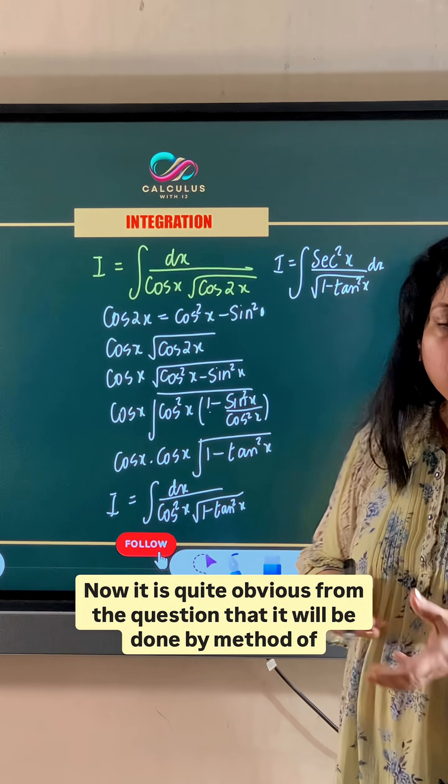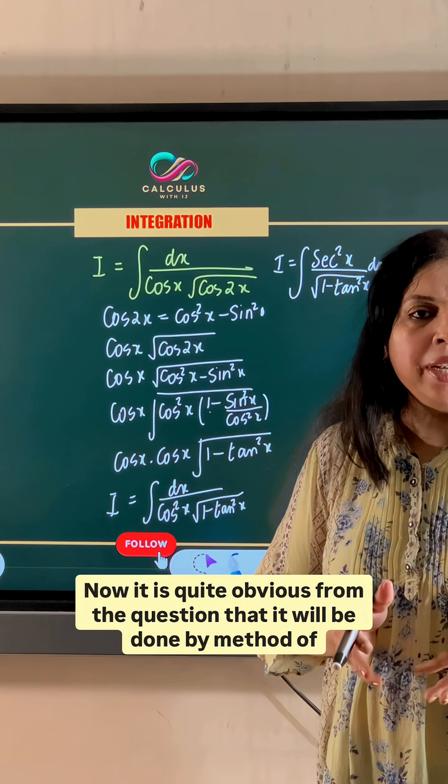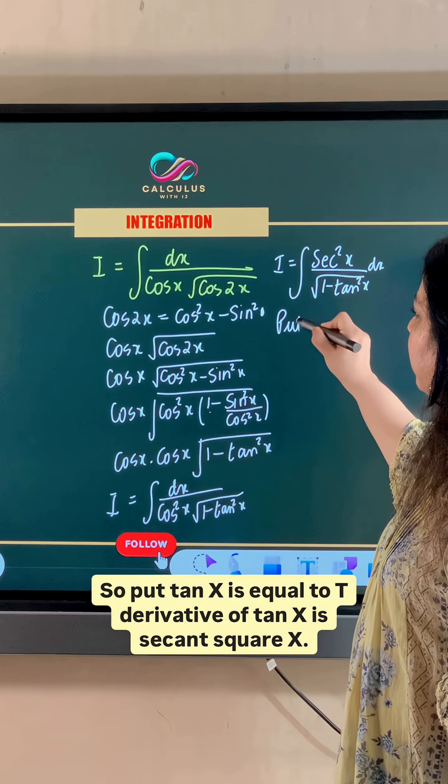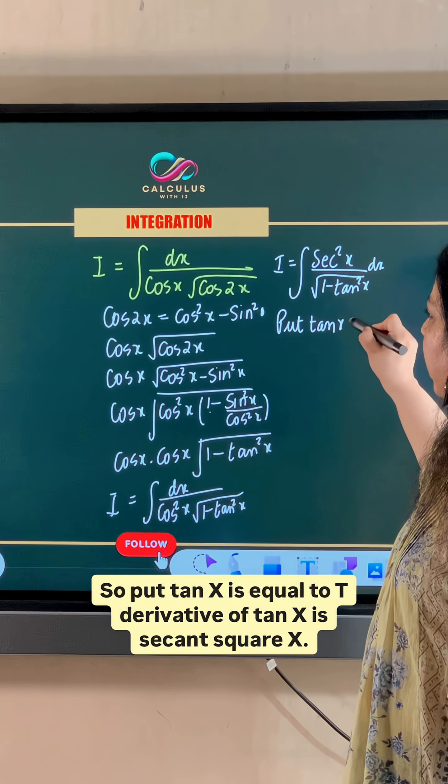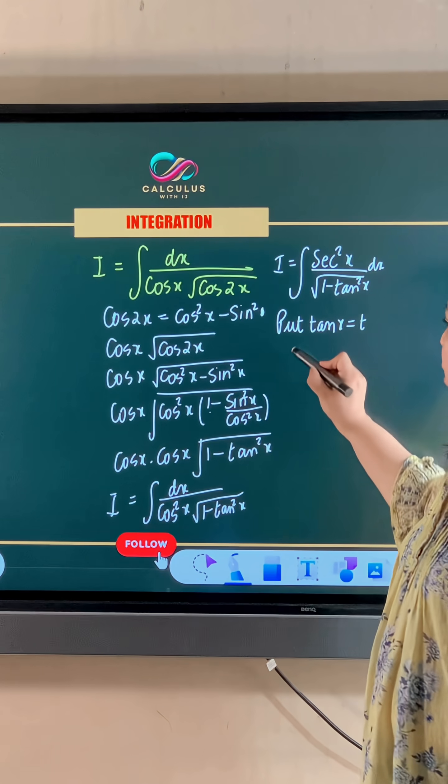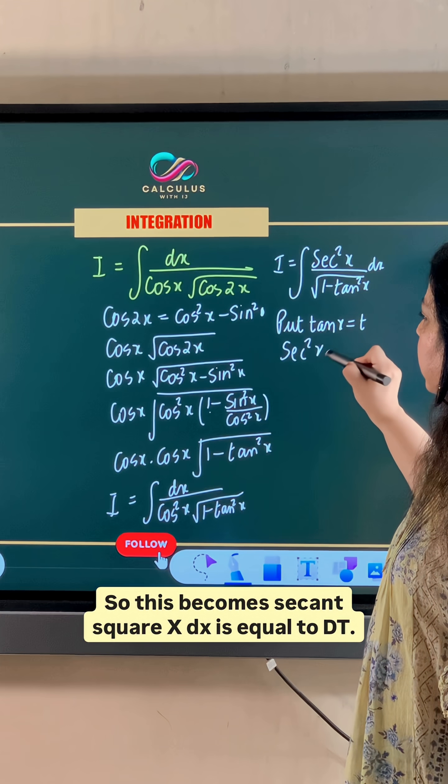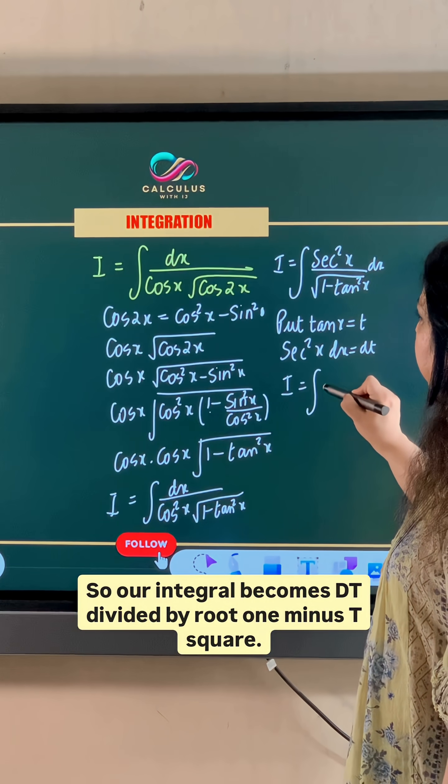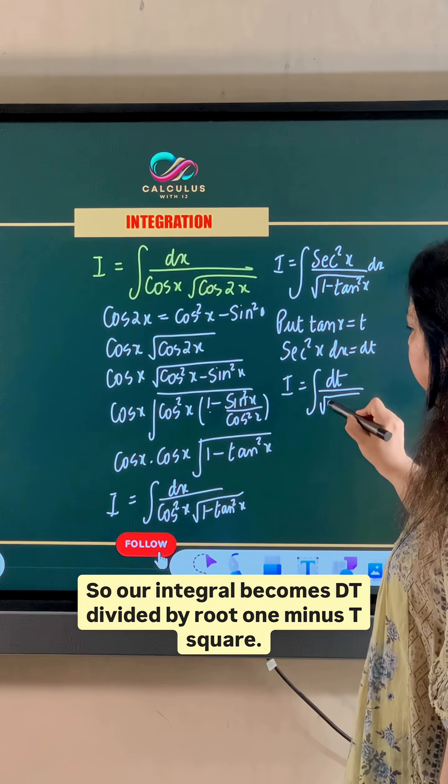Now it is quite obvious from the question that it will be done by method of substitution. So put tan x is equal to t, derivative of tan x is secant square x. So this becomes secant square x dx is equal to dt. So our integral becomes dt divided by root 1 minus t square.